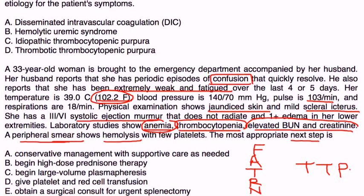The treatment, of course, is plasma exchange — removing large amounts of plasma from the blood, which removes the antibodies that damage the ADAMTS13 enzyme. You then replace with donated fresh frozen plasma, which contains normally functioning ADAMTS13 enzyme. So you're taking out the bad stuff and putting in the good enzyme — done via large volume plasmapheresis.